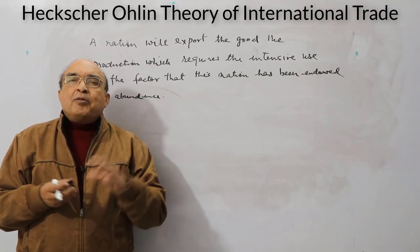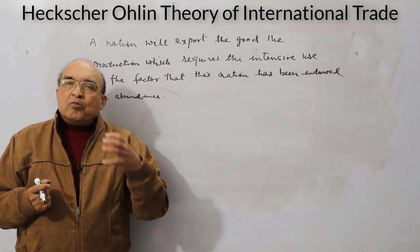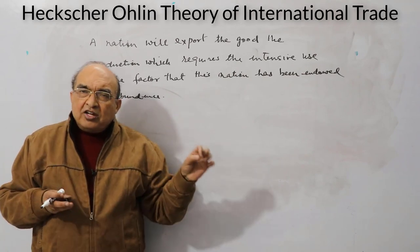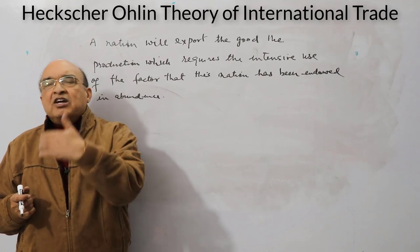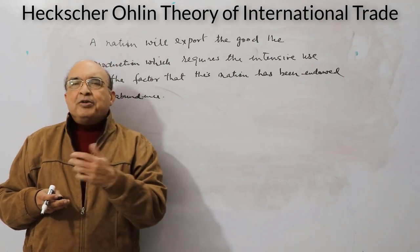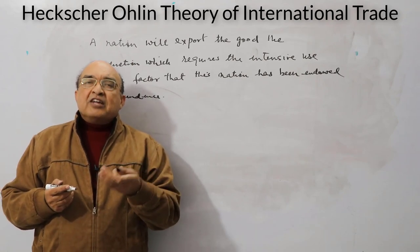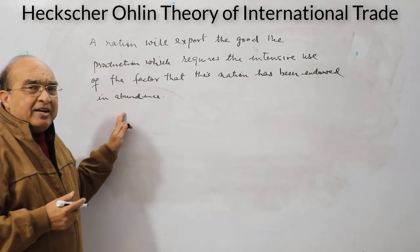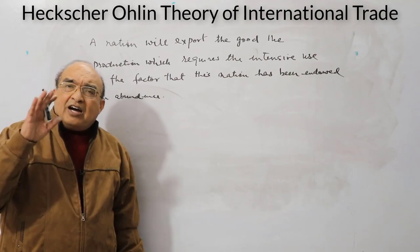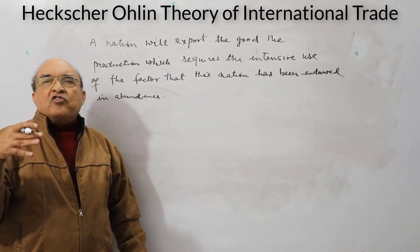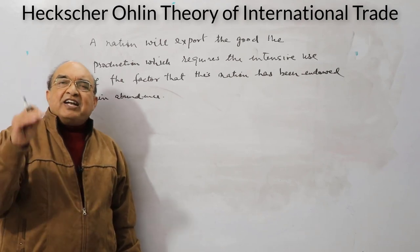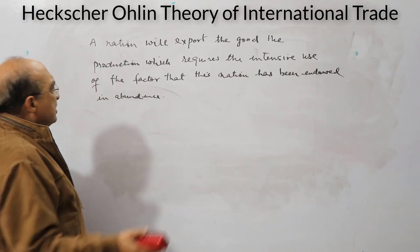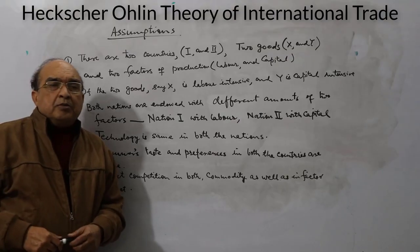Abundance refers to the physical availability — the absolute amount of a factor available in the nation: how much capital and how much labor the nation is endowed with. The theory assumes different nations are endowed with different amounts of factors, which should be fully utilized. Abundance determines which kind of good a nation will export — the one intensive in the factor available in abundance.